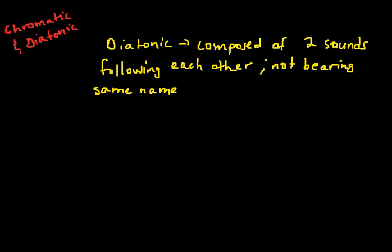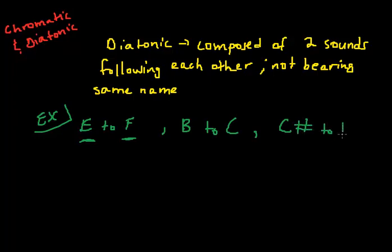For example, you would have E to F. These are two following notes. If you remember the keyboard, I'll post that little keyboard we had earlier again. But these are two semitones, but they do not bear the same name of the notes. Another example would be B to C. Another one would be C sharp to D. Again, these are all semitones, but none of them have the same name to each other.